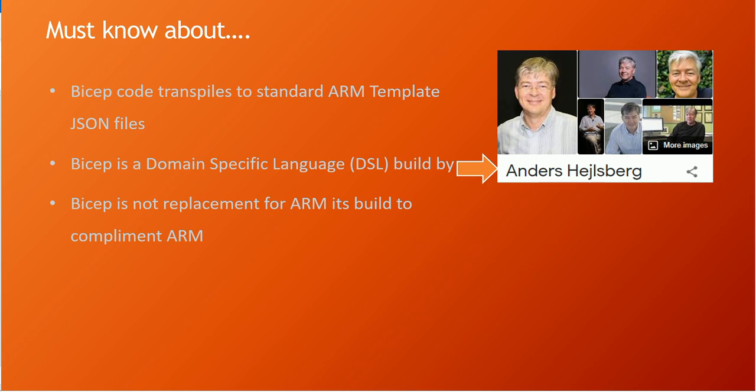Bicep is basically a transpiler. The closest relation would come with TypeScript. If you have used Angular 2 or beyond, or even Visual Studio Code — which is written on top of TypeScript — TypeScript is fundamentally a language built on top of JavaScript, but you write in a specific language and during the transpilation process, that TypeScript is converted into JavaScript. Bicep works on the same foundation: it takes the Bicep code and once you run or build it, it transpiles into a native ARM template.